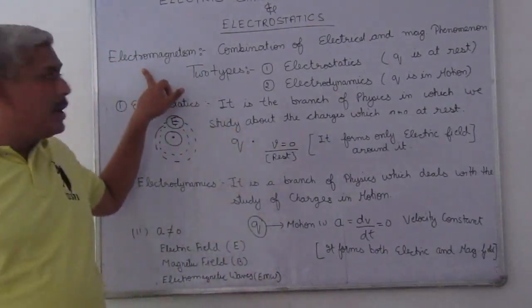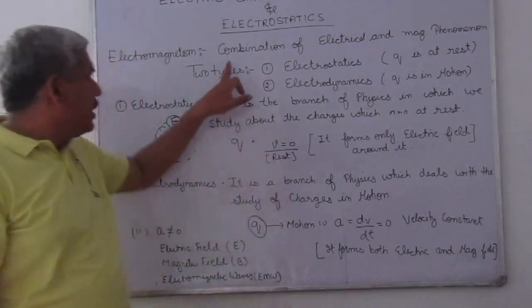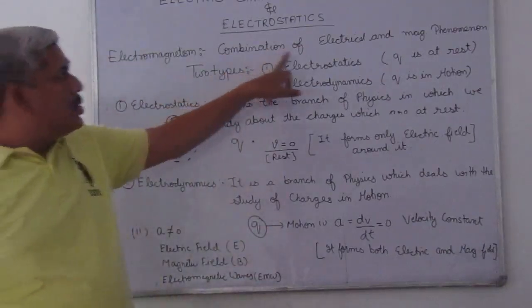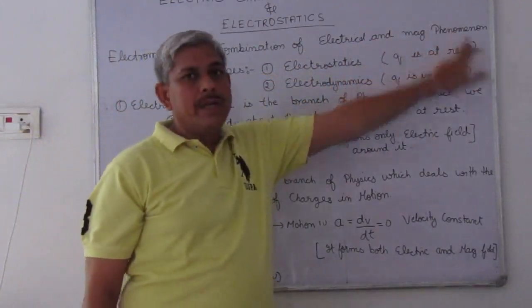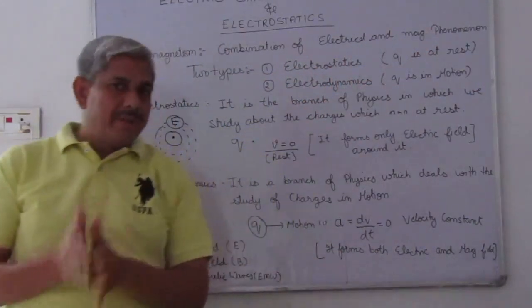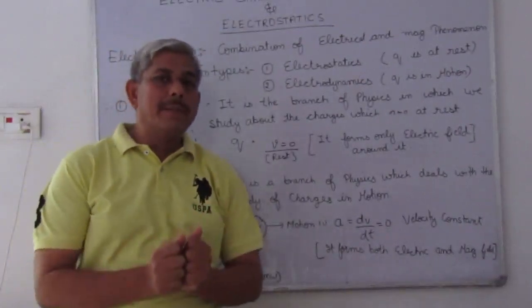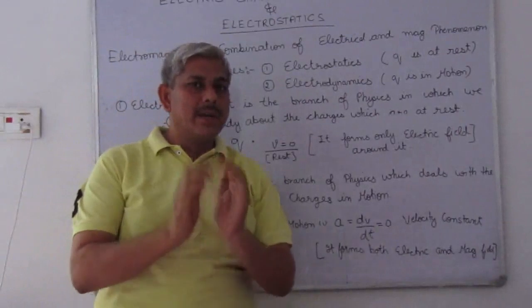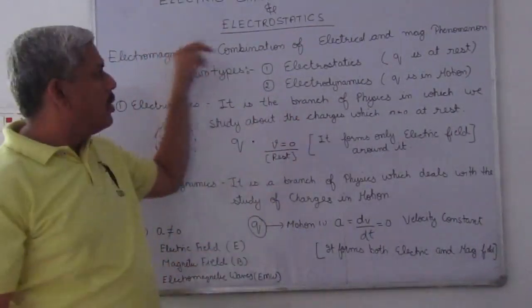First is electromagnetism. What do you mean by term electromagnetism? It is a combination of electrical and magnetic phenomena. That means when electric phenomena as well as magnetic phenomena both are taking place simultaneously at one time, then it is known as electromagnetism.